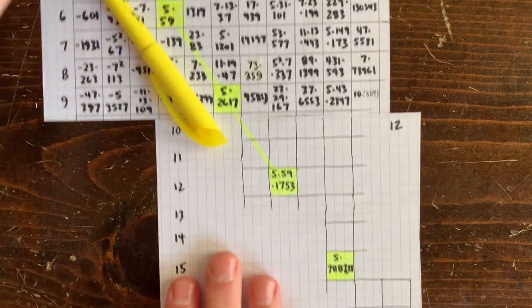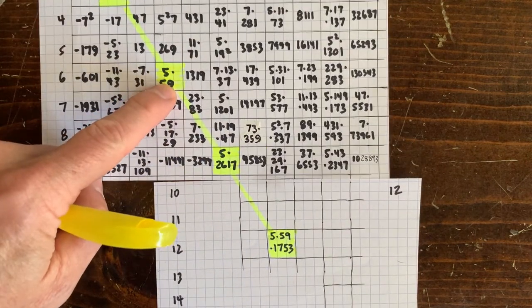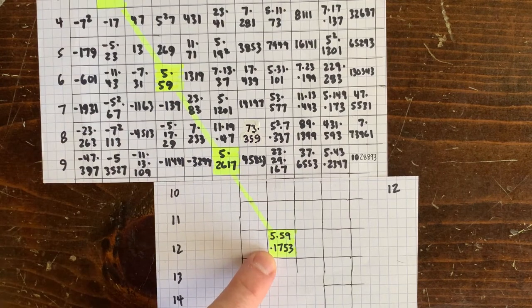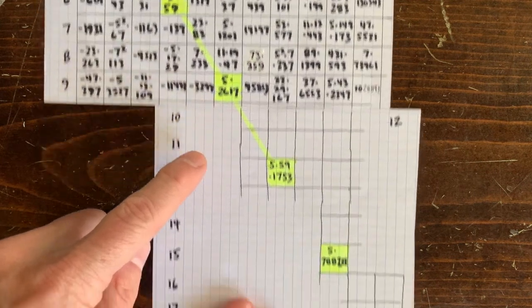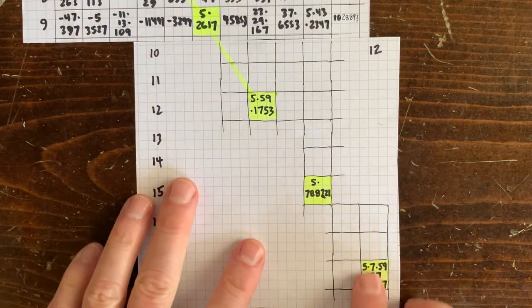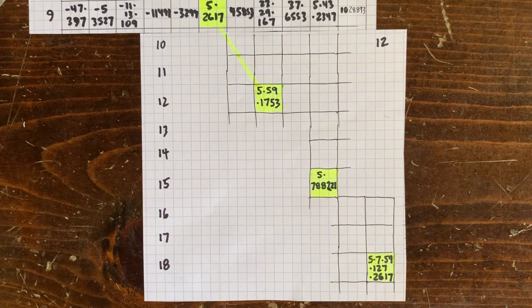Now this 59 in the second position gets inherited by every other cell along this line, all the even numbered ones. And this 2617 gets inherited by every third cell. So inheritance tells us a lot about the factors of something like this mystery cell.